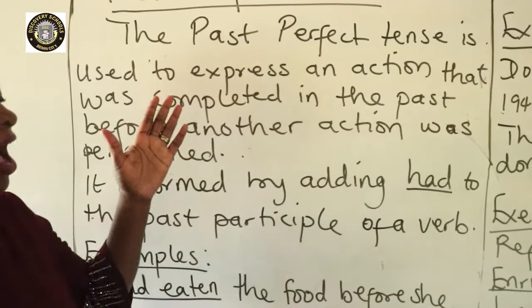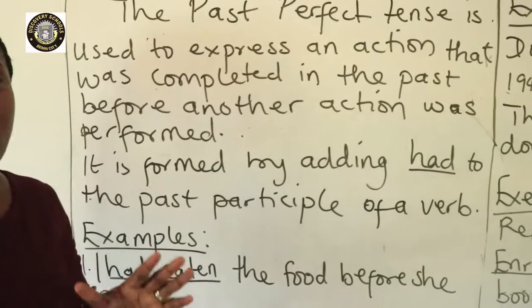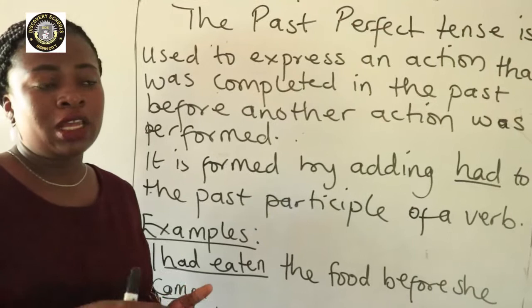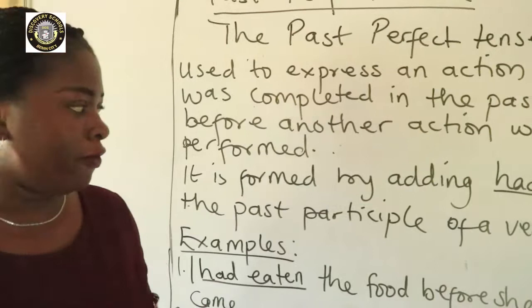That is to say, two actions were carried out in the past but one ended before the other one was performed. One action ended in the past before the other one was performed. How do we know that this is a past perfect tense?